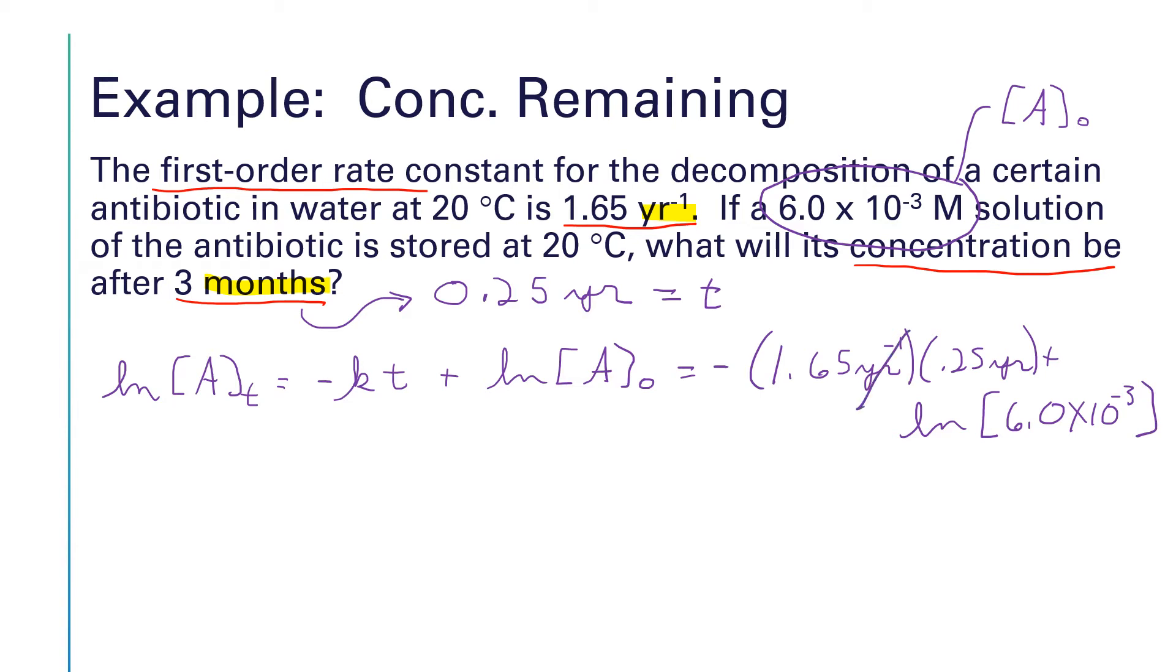Okay, years multiplied by per year cancel out. And so let's see, our left hand side here is natural log of a sub t. I'm going to run all of those numbers through my calculator.